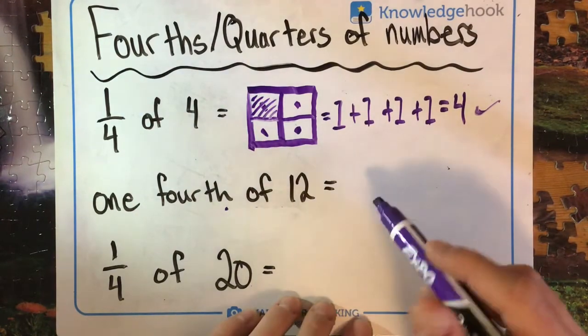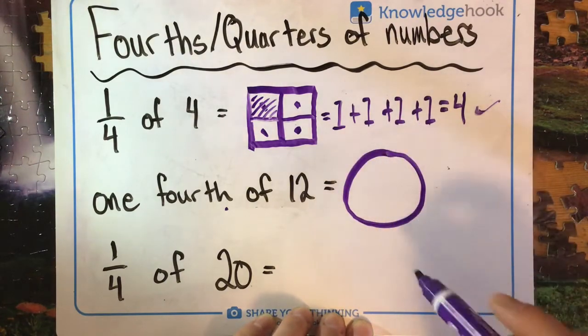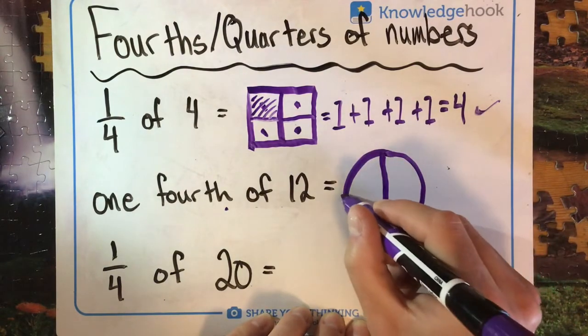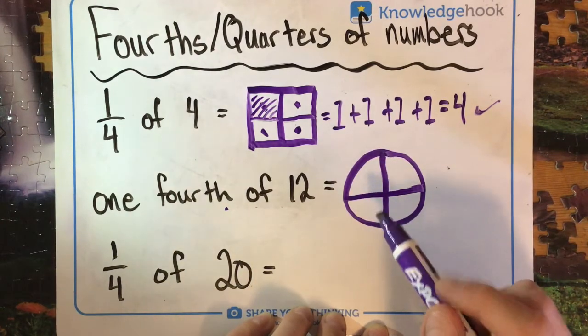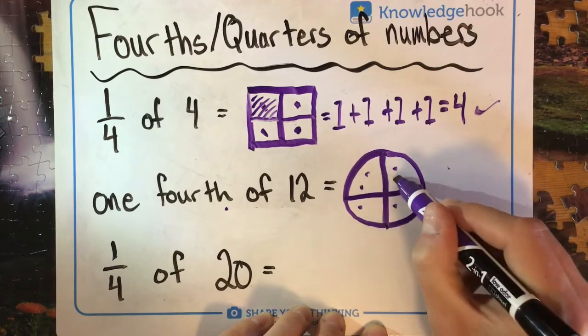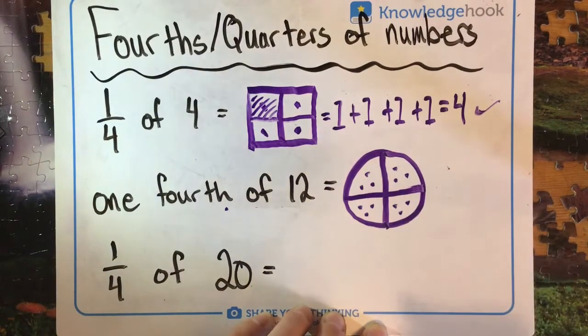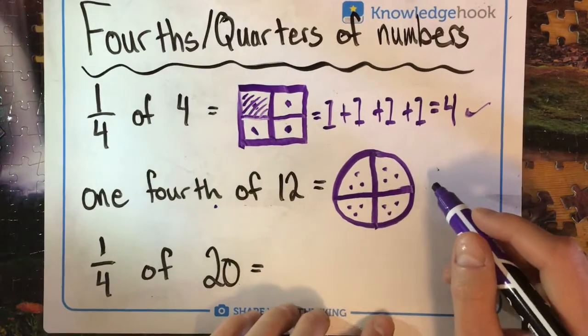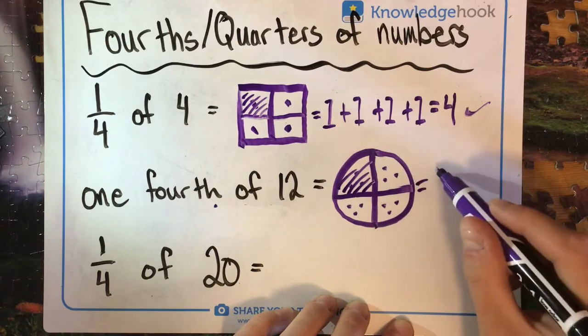Let's take a look at the second one, one fourth of 12. So this time let's go circle. And I'm going to start this time by dividing this into fourths. So in half and then half again, and I'm just going to use the counting strategy for this one. I'm going to count up to 12 and divide it evenly. One, two, three, four, five, six, seven, eight, nine, 10, 11, 12. We noticed that those all have an equal number in them. So this is indeed a fraction. And one fourth of 12 or one of those parts equals three.